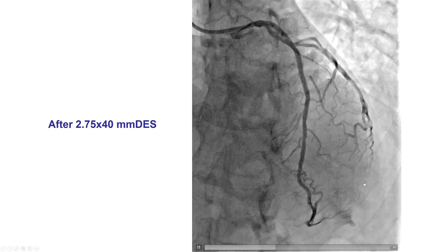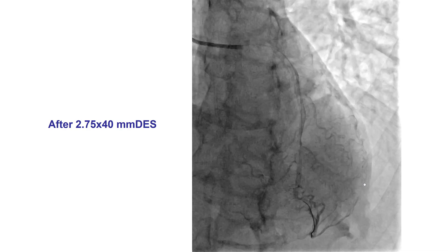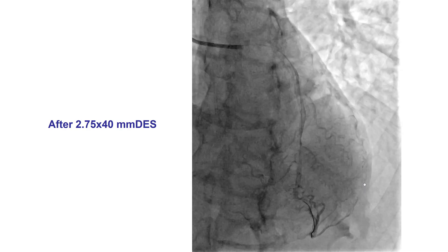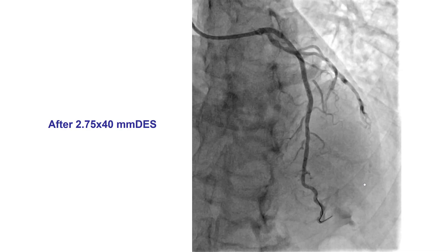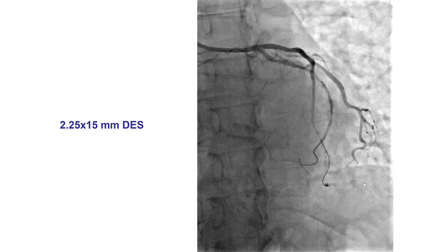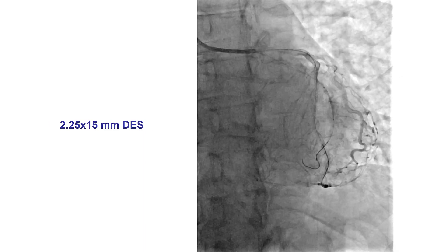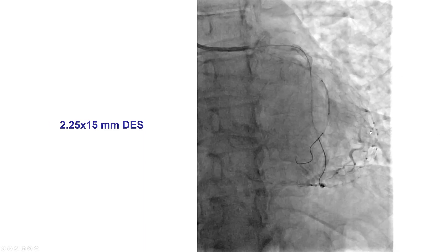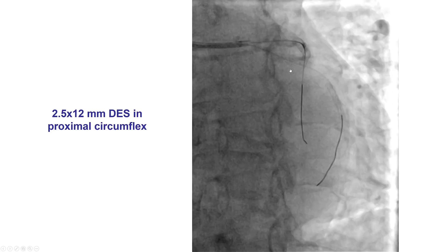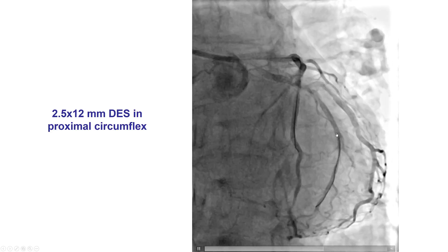Given that the septals are usually not large branches and do not cause significant consequences if occluded, we decided to proceed with the PCI of the circumflex and place stents in the mid-circumflex as well as the proximal circumflex with a nice result.